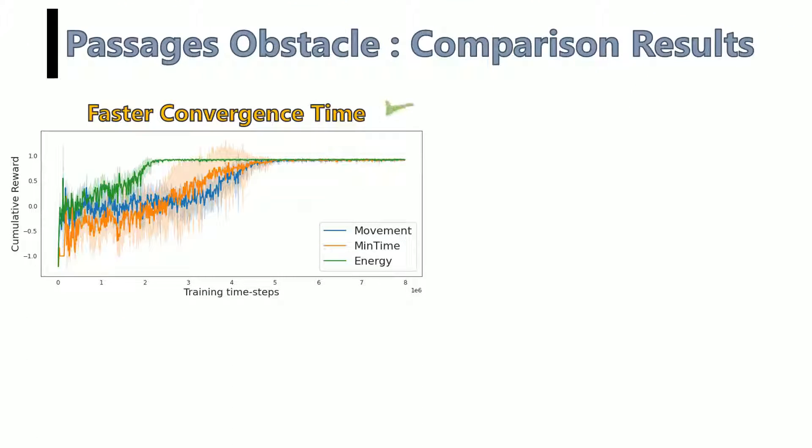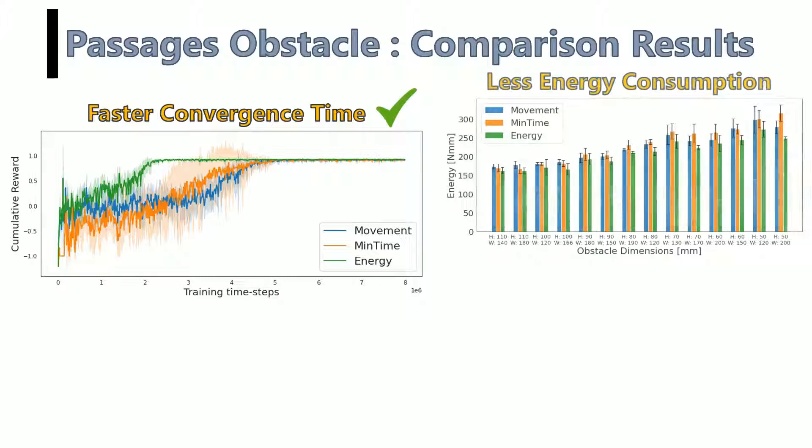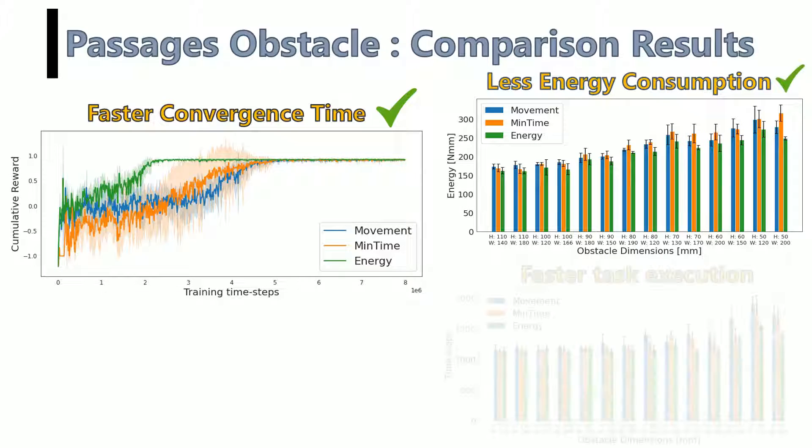Also, in this environment, the energy based reward outperformed the movement and minimum time based rewards in terms of convergence time and the performance of the trained agent.